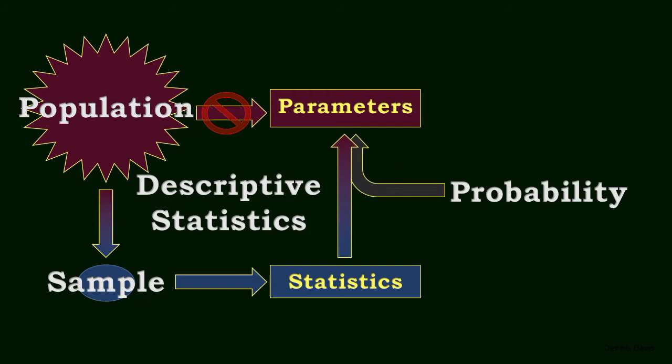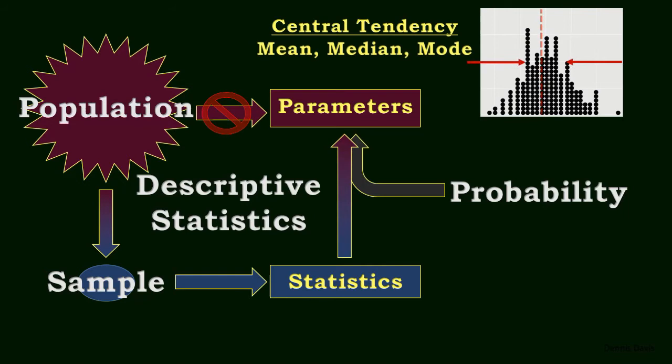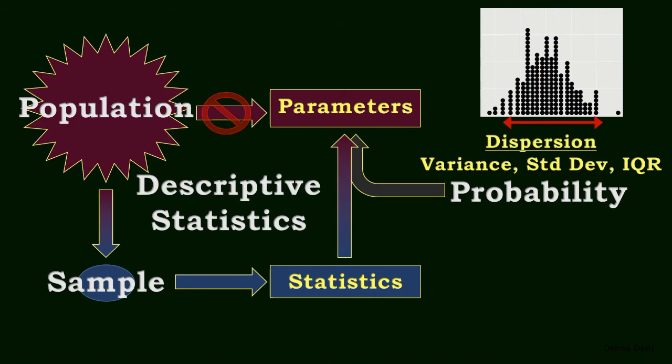Descriptive statistics include study topics which summarize a data set succinctly, including measures of central tendency, namely the mean, median, and mode, and measures of dispersion or spread outness, specifically the variance, standard deviation, and interquartile range.